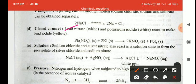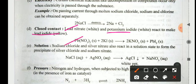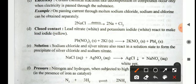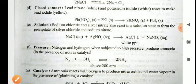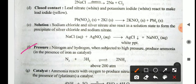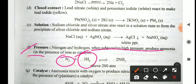Close contact: lead nitrate and potassium iodide react to make lead iodide. Solution: sodium chloride and silver nitrate also react in solution state to form the precipitate of silver chloride and sodium nitrate — NaCl + AgNO₃ → AgCl↓ + NaNO₃. Pressure: nitrogen and hydrogen, when subjected to high pressure, produce ammonia, because these are gaseous reactants. To react them, we apply pressure so they come close to each other and react to form product.